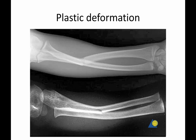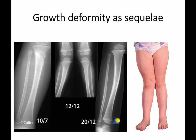You can get these fracture patterns in kids — buckle fractures, greenstick fractures, and even plastic deformation, where a bone like the radius appears just bowed rather than fractured, while the ulna may have a greenstick fracture. Growth deformity can occur as a sequelae — it can happen from a growth plate injury, but it can even happen from fractures that are not in the growth plate.